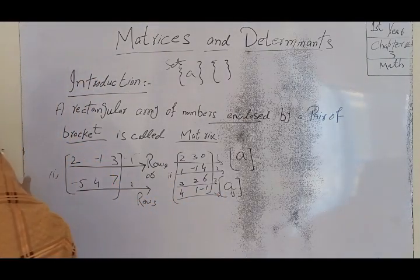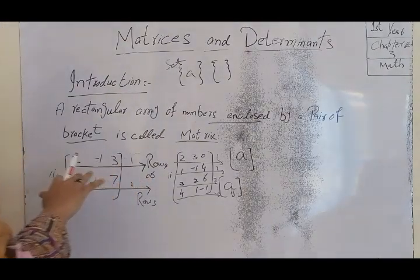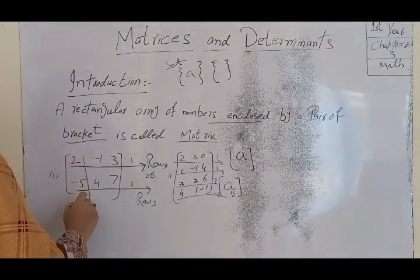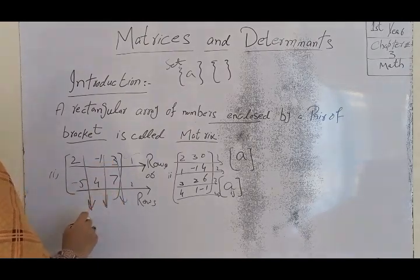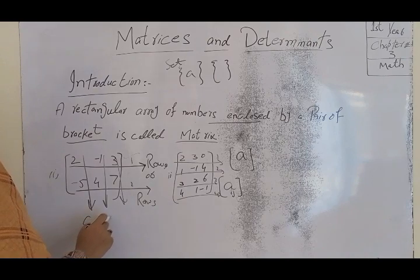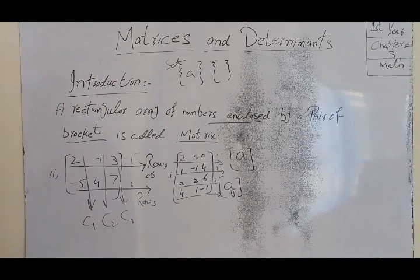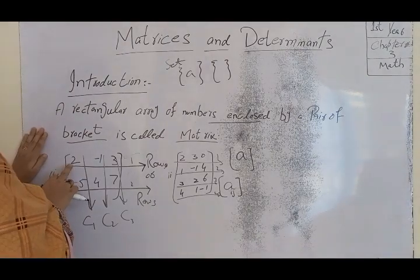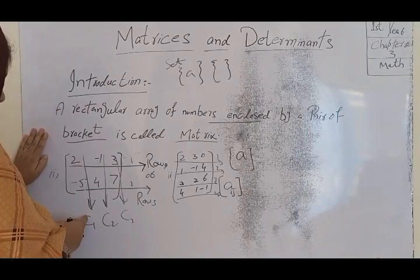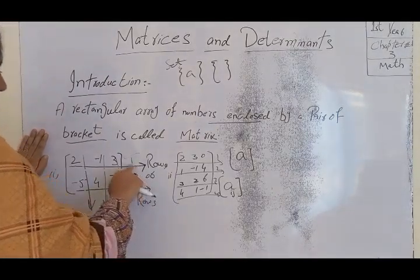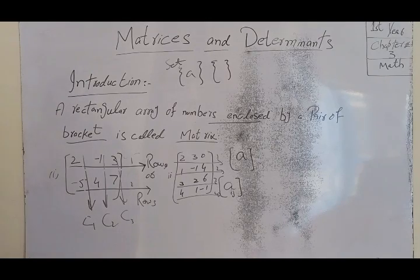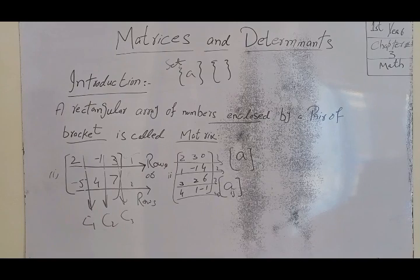These are the columns. Vertical lines are called columns. When we see lines vertically, they become columns, and when we see them horizontally, they become rows. The numbers inside the brackets are called Arkan, Elements, or Members.